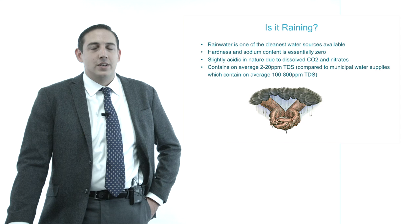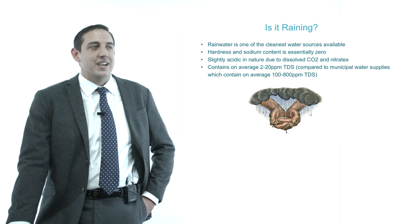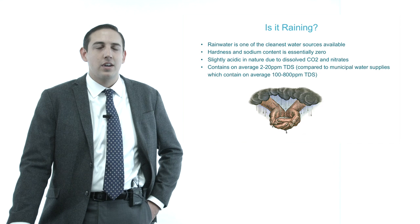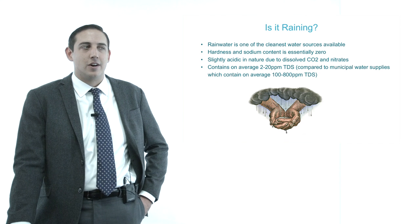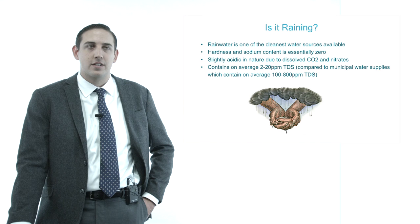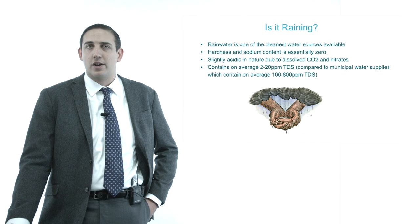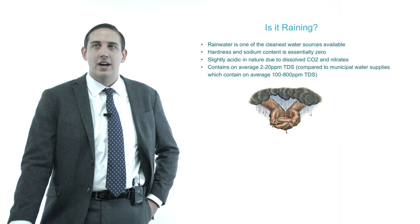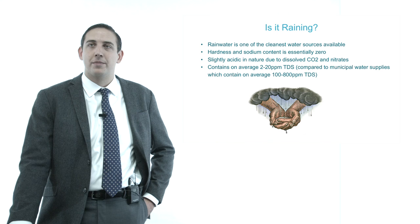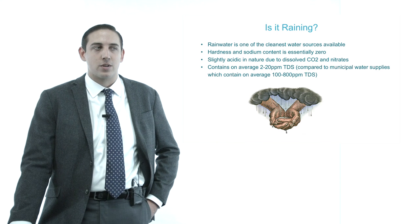So what is rainwater? Most people really don't think about it, but in a scientific sense, rainwater is actually one of the cleanest sources of water available. Its hardness and sodium content is essentially zero. This is because it has no contact with the ground — there is no mineral content associated with it. It's not any kind of watershed; rain that hits your hand is a very, very clean source of water.